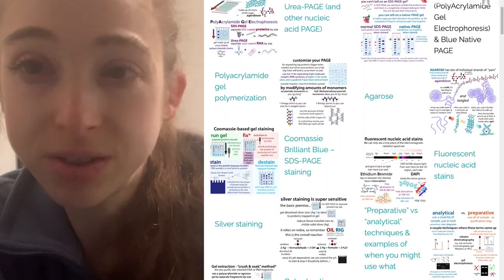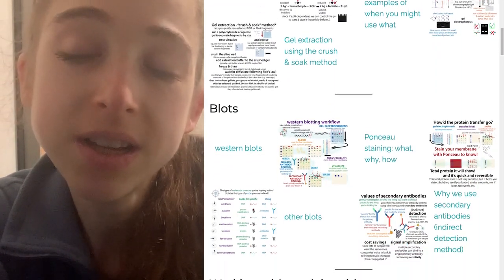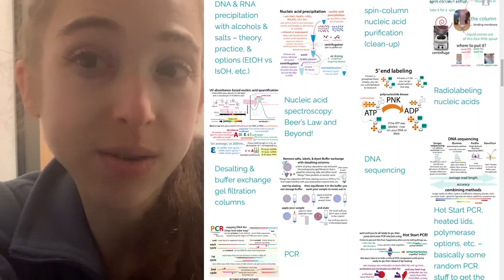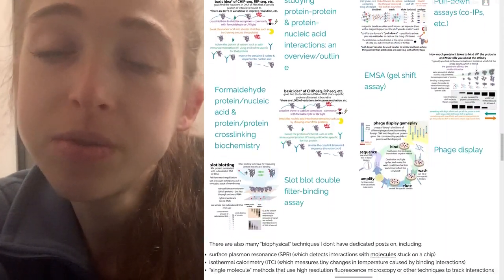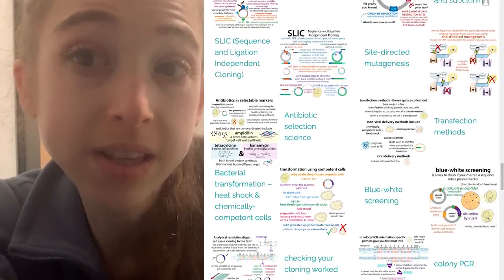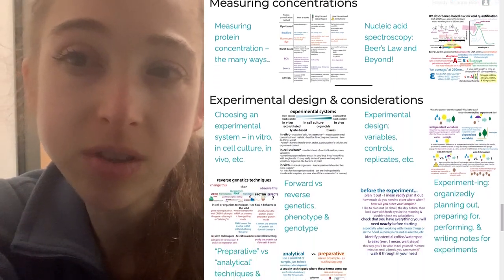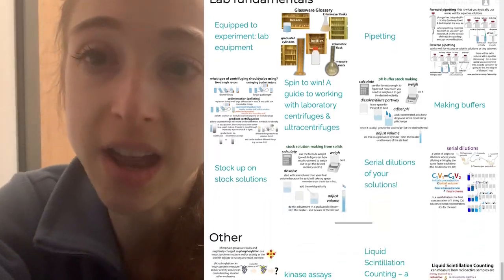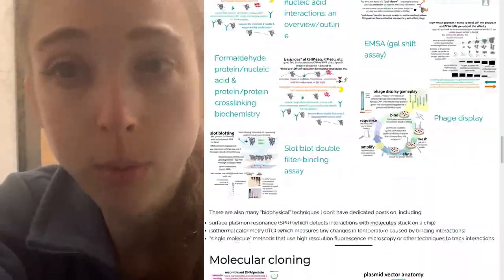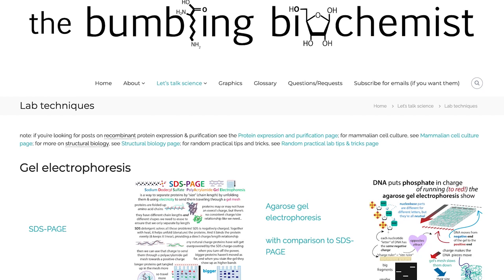There are tons of techniques you might encounter in biochemistry, and what technique scientists choose to use depends on things like what questions they're trying to answer as well as what equipment they have access to. Here is an overview of some key biochemistry techniques — some of the main ones as well as some more obscure ones. I have posts linked for more information, and I'll put timestamps in the comments so you can jump to the parts that interest you.